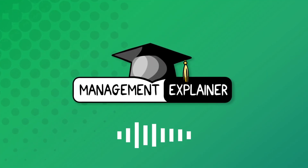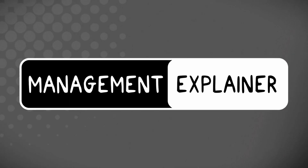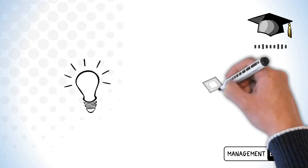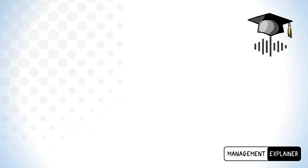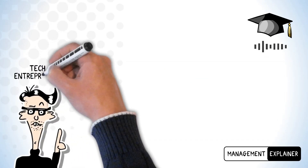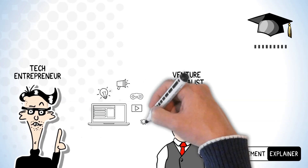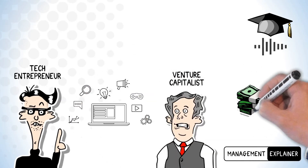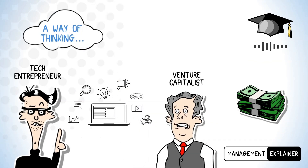Hi everyone, welcome to the Management Explainer. This video is about what you should know about platform business models. When the computer industry started in the mid-20th century, there was a general feeling that computers would change the world, but it was totally unclear how this would happen. In the 1990s and 2000s, the current crop of technology entrepreneurs arrived, funded by their venture capitalist friends. This gradually led to the internet and social media as we know them today, and made many technology entrepreneurs extremely wealthy. In this video, I'm talking about the structure — the way of management thinking, if you like — that enabled all of this. I'm talking about platforms, of course.